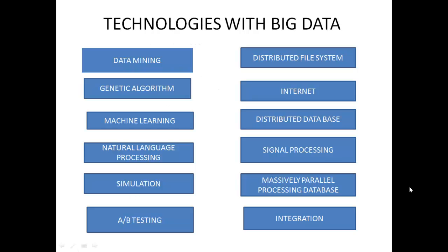Technologies that go hand in hand with Big Data include data mining, distributed file system, internet, machine learning, distributed database, natural language processing, signal processing, simulation, massively parallel processing database, A/B testing, and integration. These are some of the technologies that go hand in hand with Big Data.